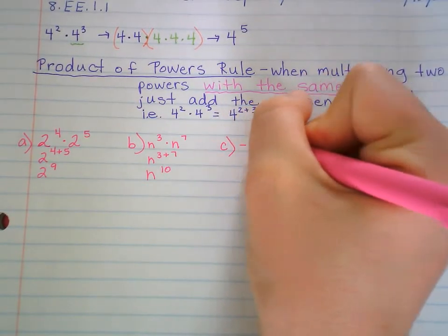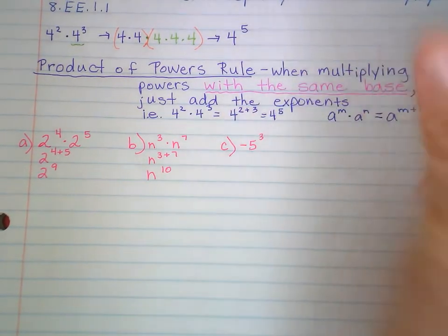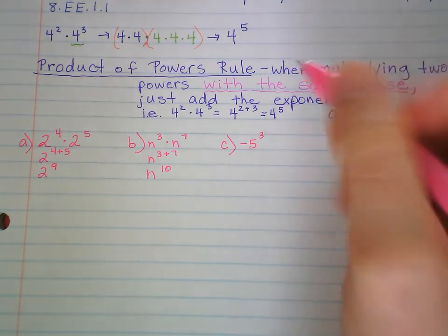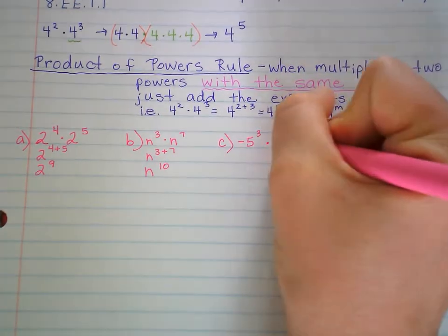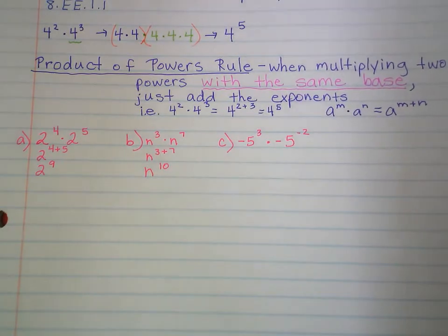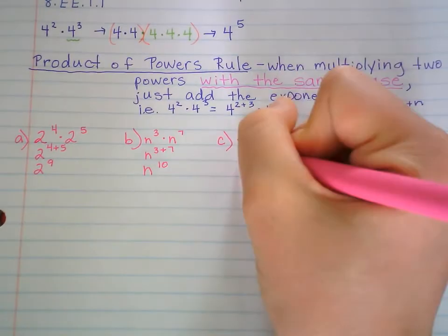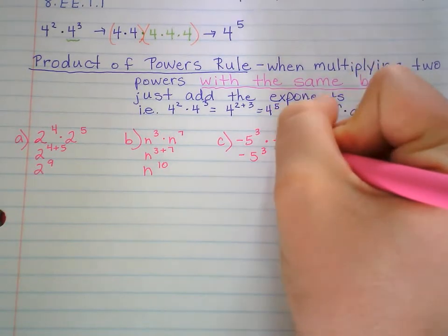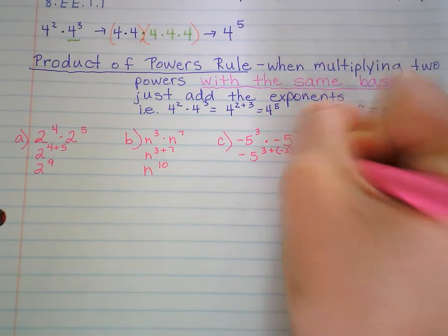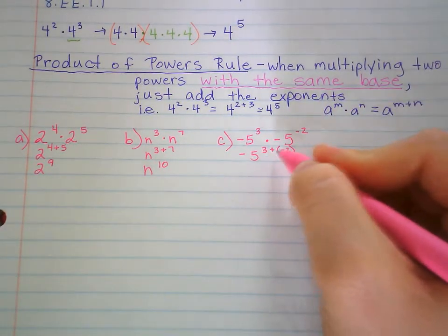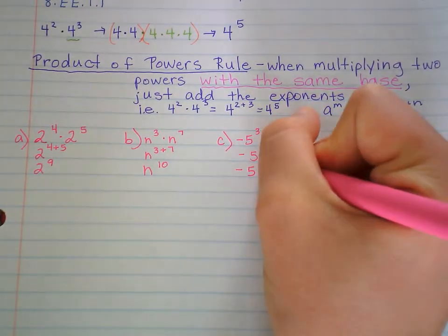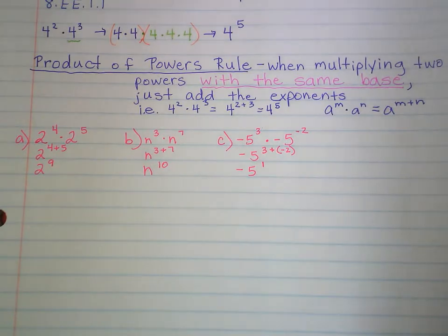Example C: negative 5 to the 3rd — remember, that 5 is being raised to the 3rd power, not the negative — times negative 5 to the negative 2nd. Add the exponents: negative 5 to the 3 plus negative 2. Now 3 plus negative 2 is the same as 3 minus 2, so it's negative 5 to the 1st power, which is just negative 5.